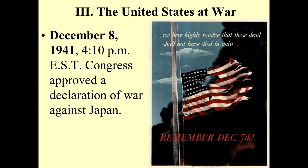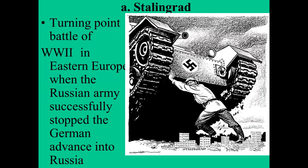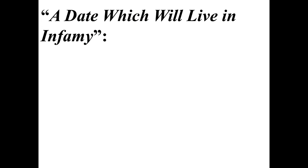December 8th, 1941, at 4:10 p.m. Eastern time, Congress approved a declaration of war against Japan. 'A date which will live in infamy' — that's straight out of FDR's statement: 'December 7th, 1941, a date which will live in infamy. The Empire of Japan suddenly and deliberately attacked Pearl Harbor' — basically saying they did this with no provocation and now we are going to go to war with them.